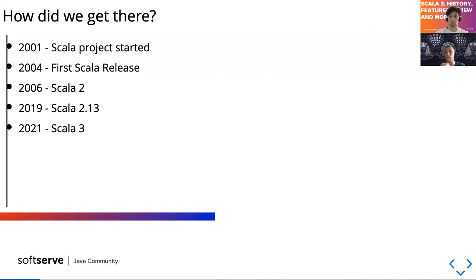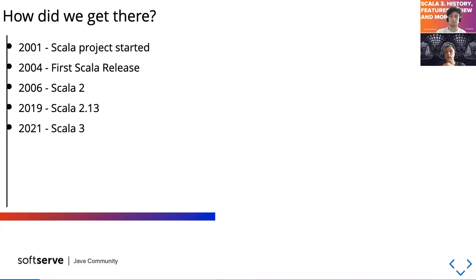Let's start with the history. The Scala project started in 2001 at EPFL in Sweden by Professor Martin Odersky and his students. They started this project to prove that object-oriented programming and functional programming fusion can exist and works well. The first release of Scala happened in 2004. Then in 2006 they released Scala 2, and until now we've seen only releases of the second branch. The last one came out in 2019 — Scala 2.13 — and this year, finally, they released Scala 3 in March.